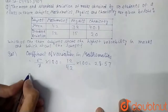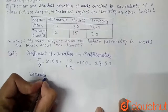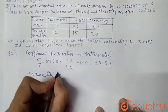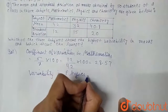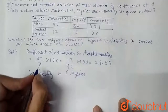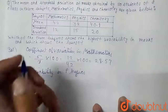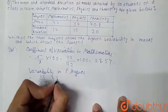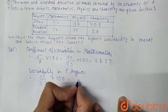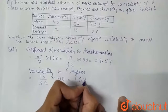Now we will find the variability of physics. Using the same formula, CV = (sigma / mean) × 100. For physics, sigma = 15 and mean = 32, so CV = (15 / 32) × 100 = 46.875.